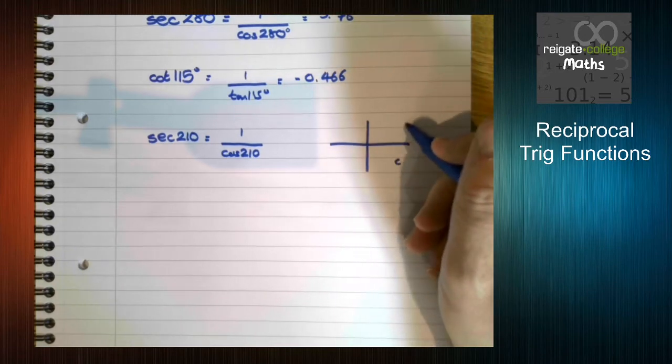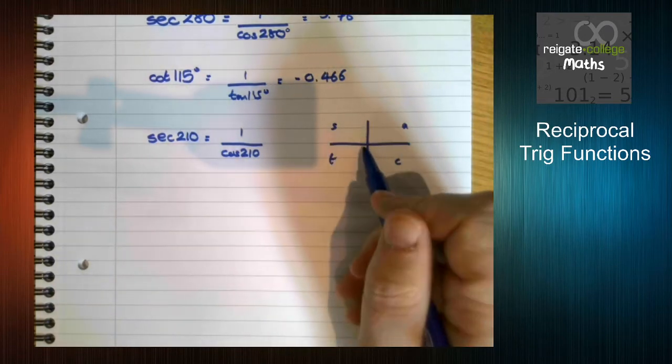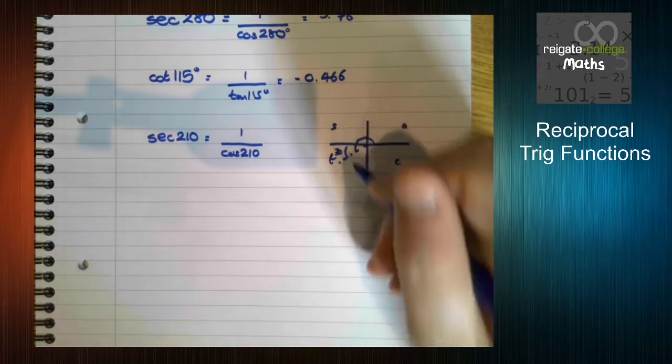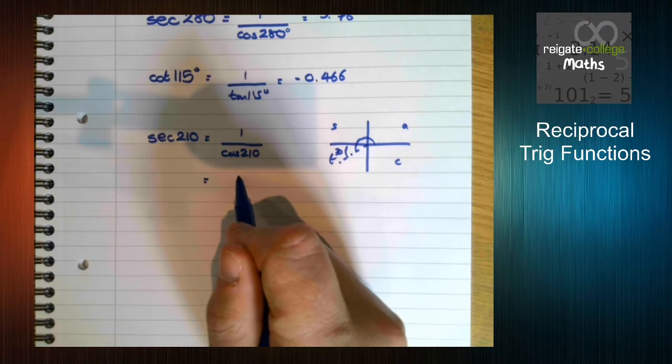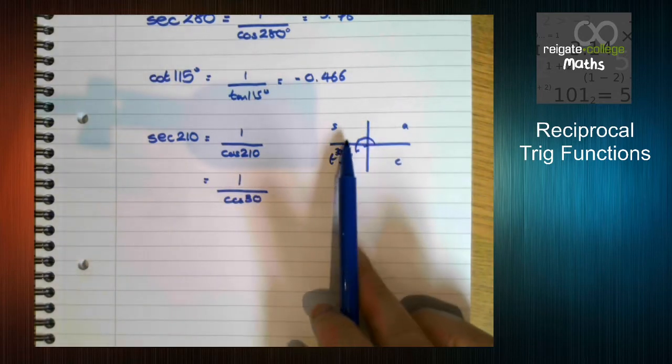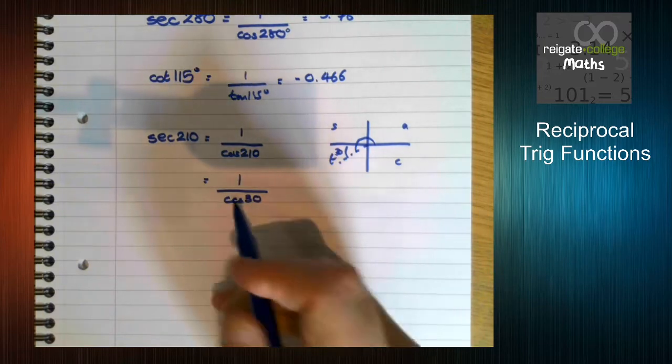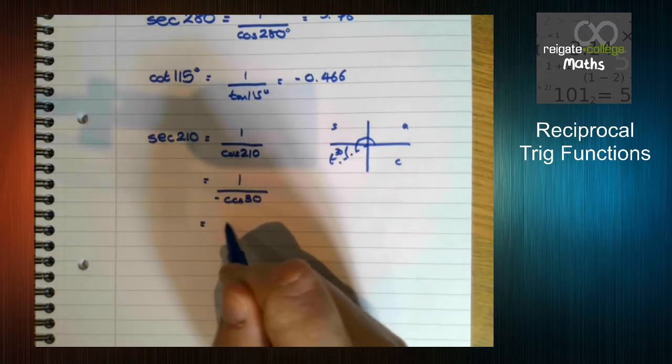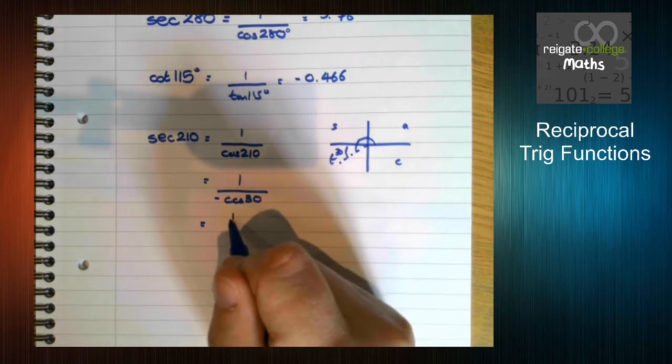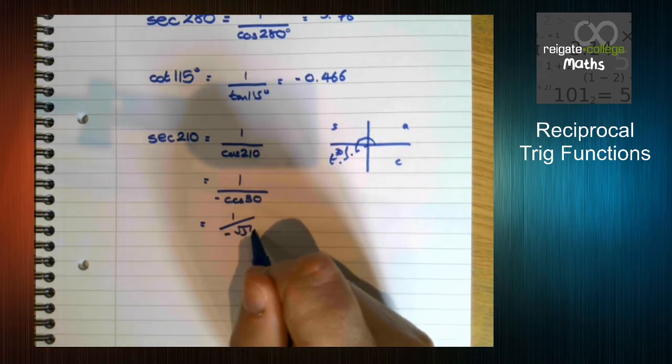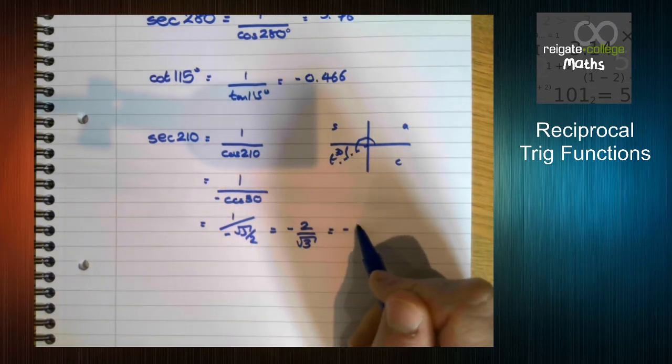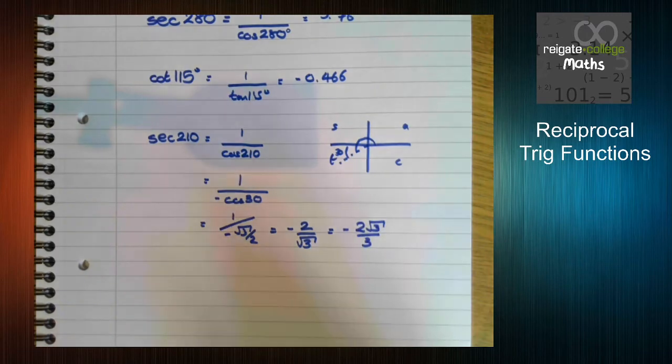Because of the way the angles work, we know that 210 is going to put us down here, going this way. This angle is 30. So the size of cos 210 is going to be the same as the size of cos 30. Because it's in the t quadrant, it's going to be minus. So we know that cos 30 is root 3 over 2, which is 1 over minus root 3 over 2, which is minus 2 over root 3, which we can then simplify to minus 2 root 3 over 3.